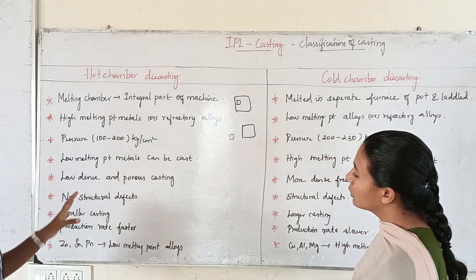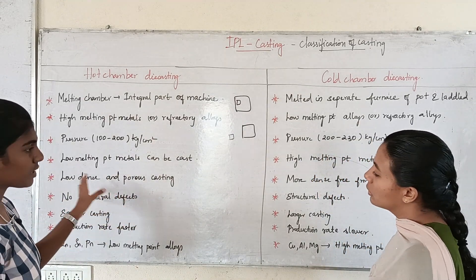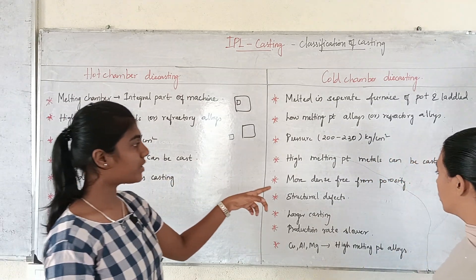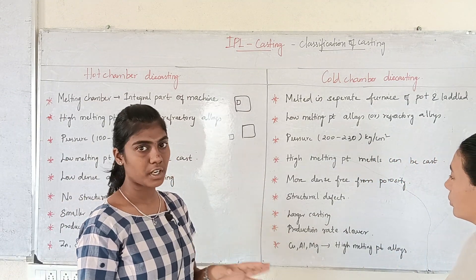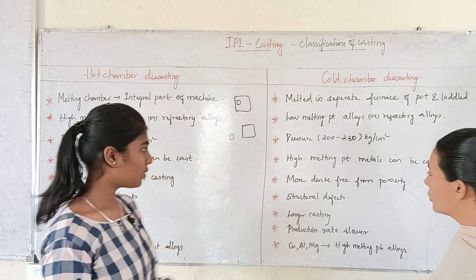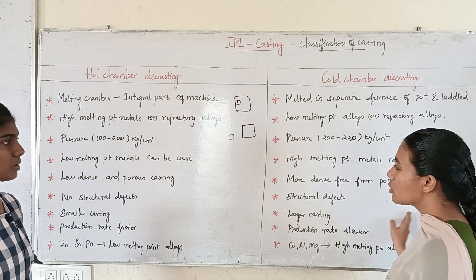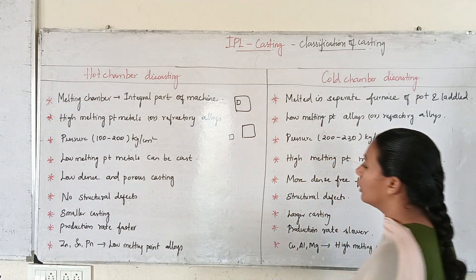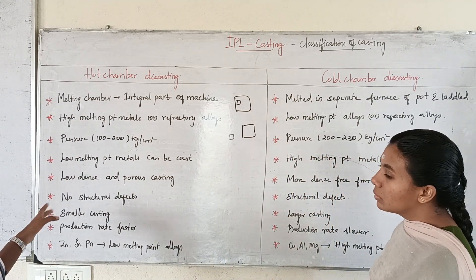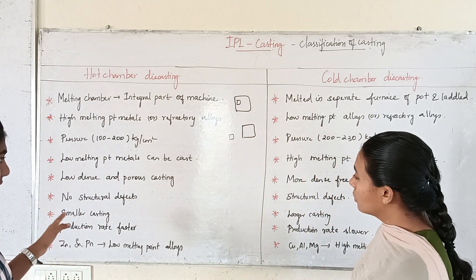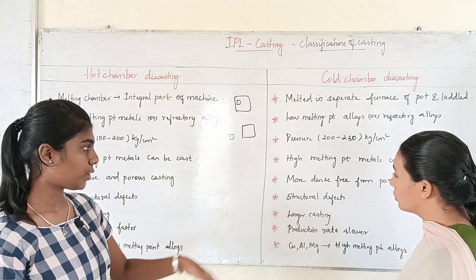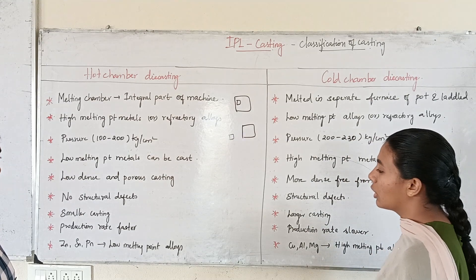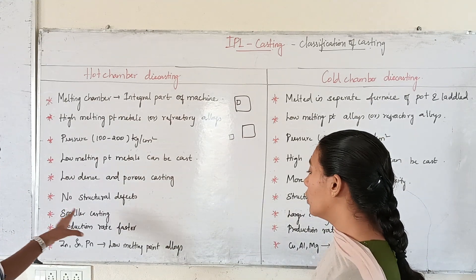Hot chamber casting produces lower density and more porous castings. Cold chamber casting produces higher density with less porosity. That is the structural difference between them.